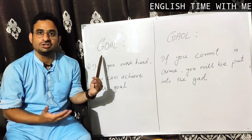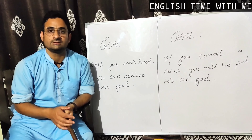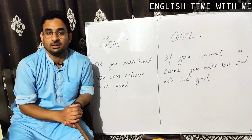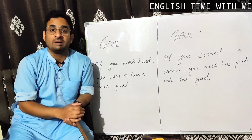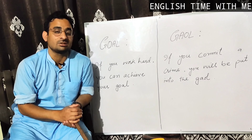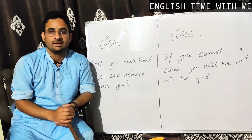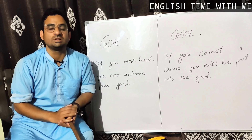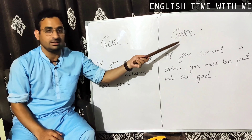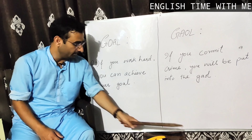This one is goal, G-O-A-L, and this one is G-A-O-L. The basic difference between these two words is of pronunciation. This one is 'goal' and this one is 'jail.' This one is not 'goal' — it is pronounced 'jail.'